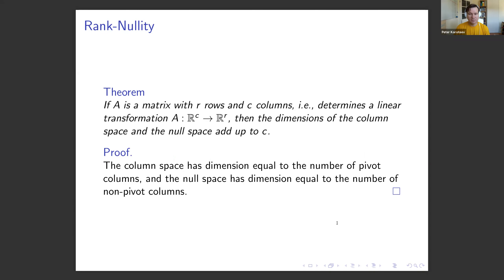A couple of theorems. First, the rank-nullity theorem: if A is a matrix with R rows and C columns, determining a linear transformation from RC to RR, then the dimensions of the column space and the null space add up to C. The proof is literally one sentence: from the echelon form, the column space has dimension equal to the number of pivot columns, and the null space has dimension equal to the number of non-pivot columns — add them together and you get C.